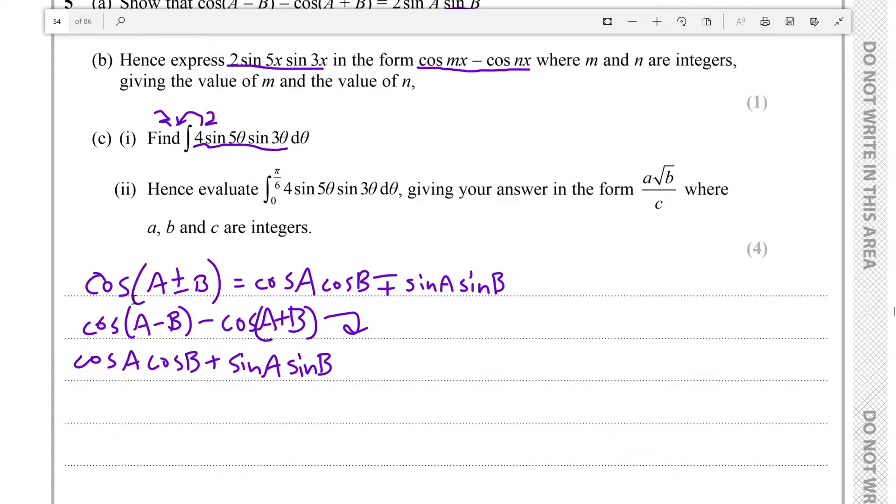Minus cos(A+B), so minus cosAcosB minus minus sinAsinB. This positive cosAcosB and this negative cosAcosB will cancel out, and you're left with sinAsinB + sinAsinB, which is equal to 2sinAsinB.